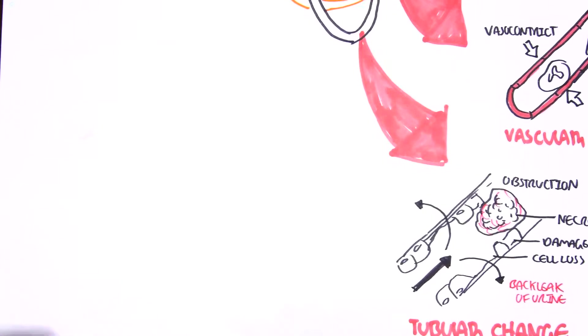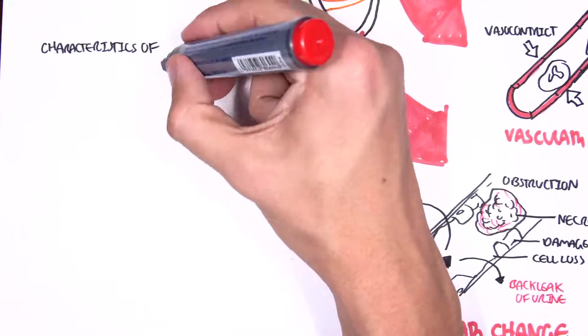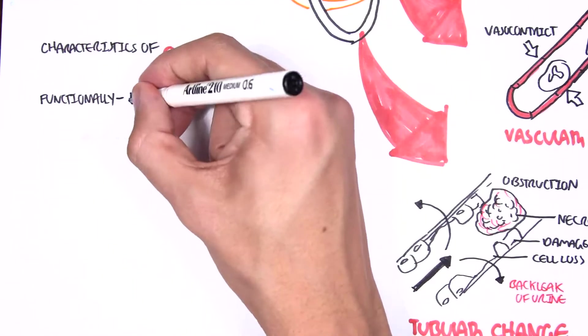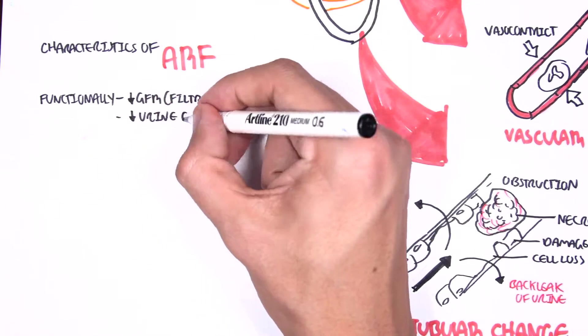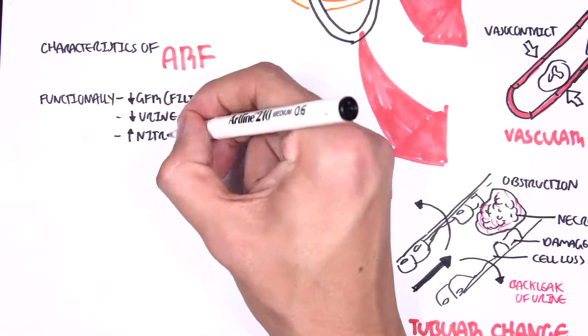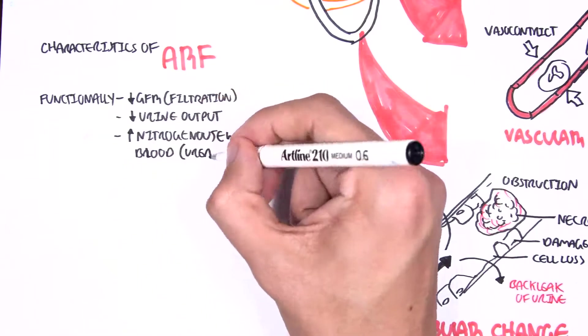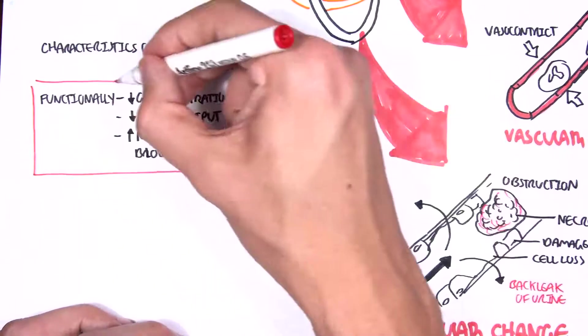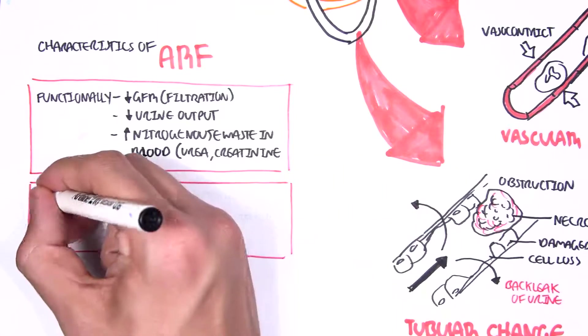Now just quickly going over the characteristics of acute renal failure. Functionally we have, remember, a decrease in GFR. This will lead to a decrease in urine output and we will have, as a result of some problems in the tube, an increase in nitrogenous waste in the blood such as urea and creatinine. This is what we can use to measure acute renal failure and the severity.